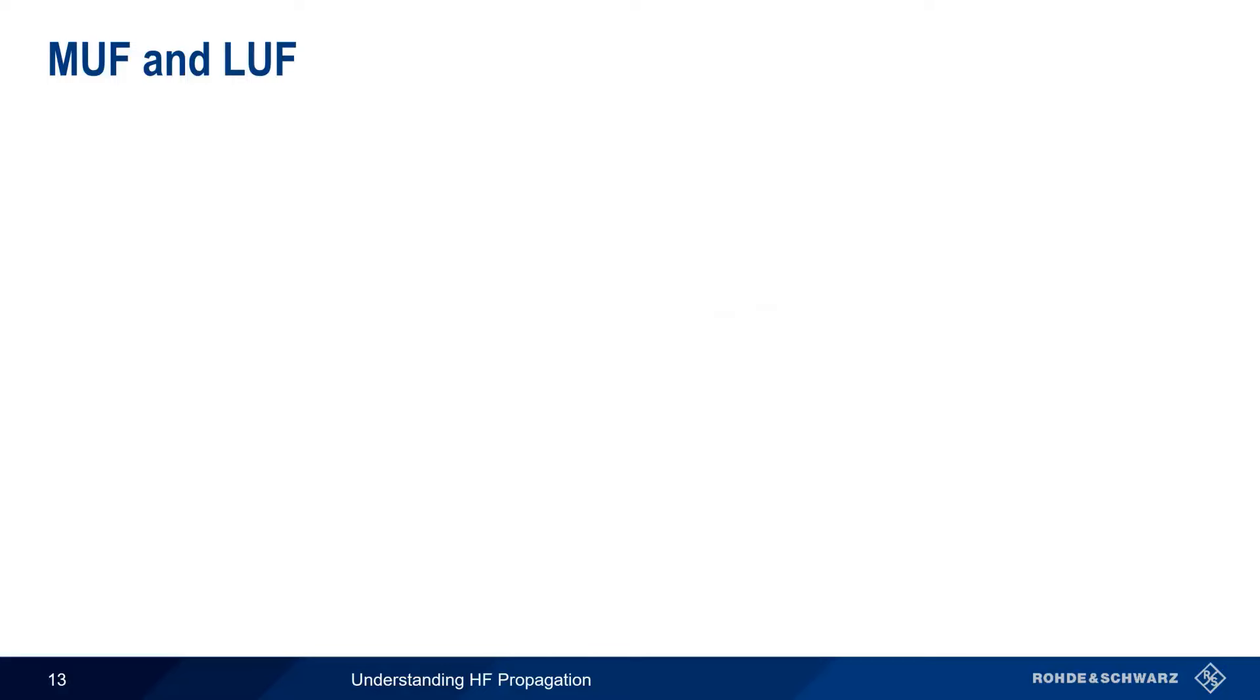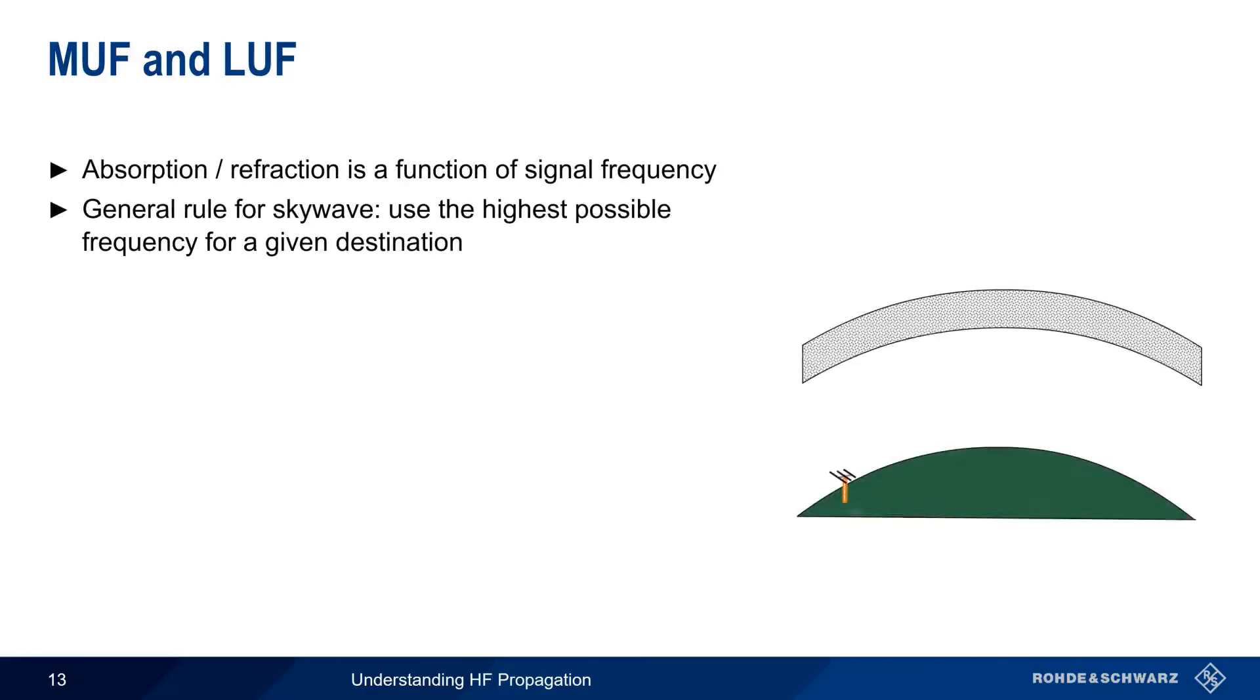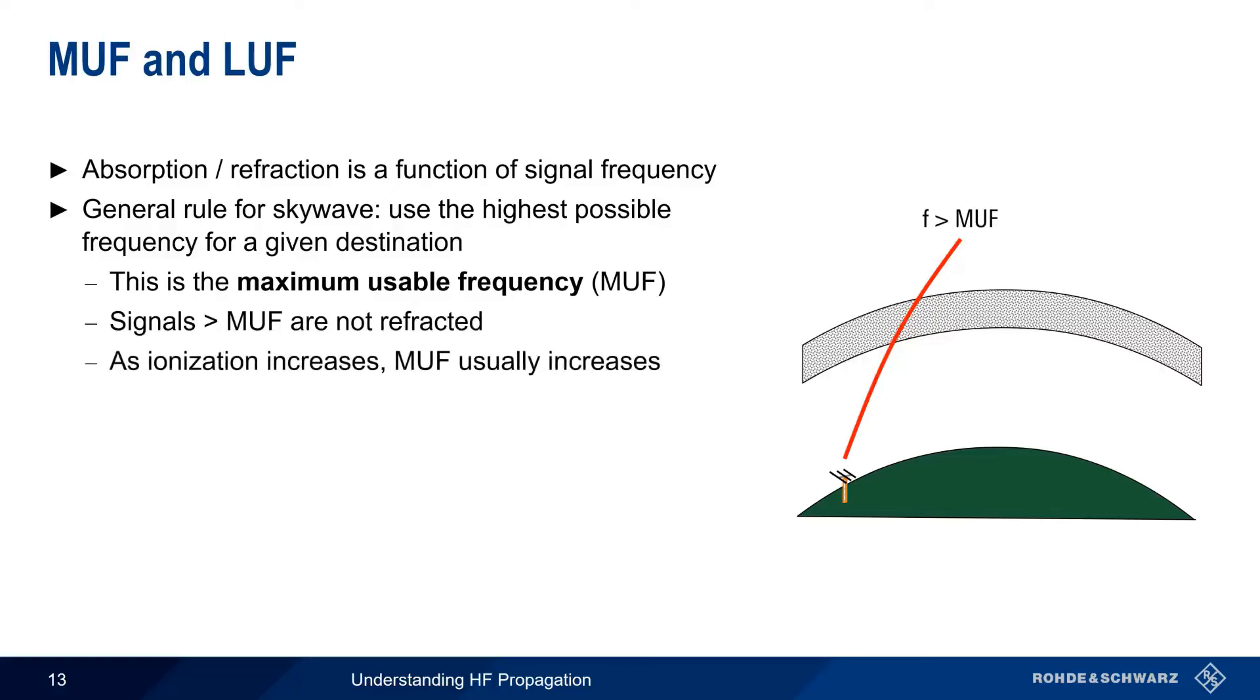The degree to which the different layers of the ionosphere refract and/or absorb radiofrequency signals is largely a function of that signal's frequency. The general rule for HF skywave communications is to always use the highest possible frequency that will reach a given station or destination. This is called the maximum usable frequency, or MUF. Signals whose frequencies are higher than the MUF will not be refracted by the ionosphere. Usually, the MUF increases with increasing ionization.